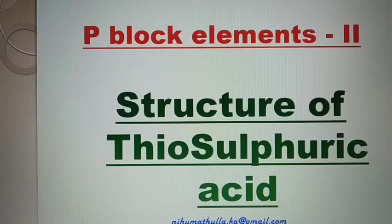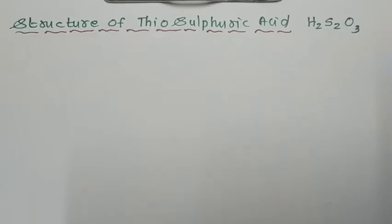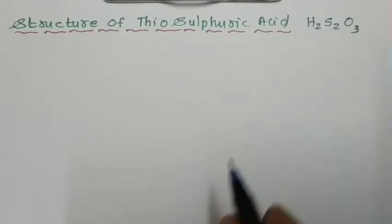Now we are going to study how to draw the structure of thiosulfuric acid. The molecular formula is H2S2O3.